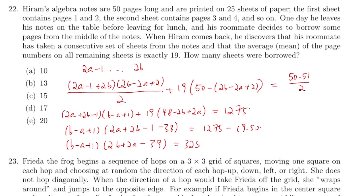So B minus A plus 1 times 2B plus 2A minus 39. And that equals to 325. Because one of the expressions, one of the parts is very close to double of the other. So I would try to guess that this equals to 25 while B minus A plus 1 is 13. So solving we'll get B equals 22 while A is 10. So all together, 13 sheets were borrowed. So the answer is B.